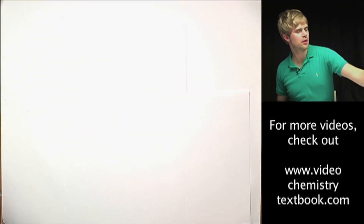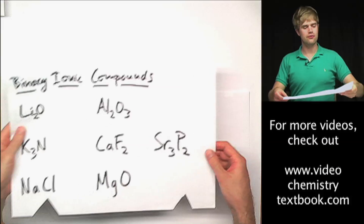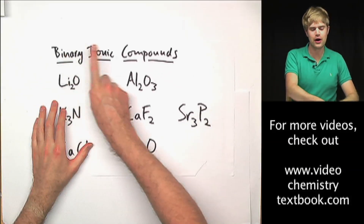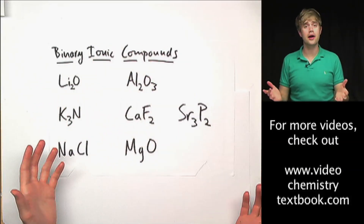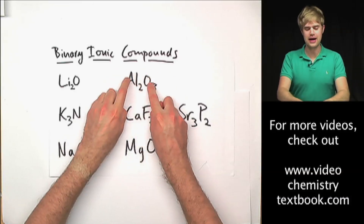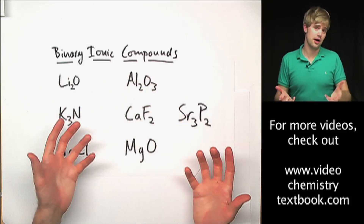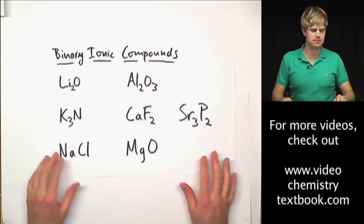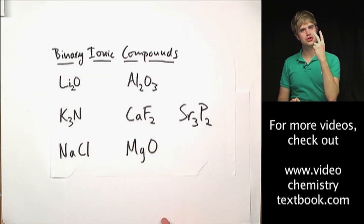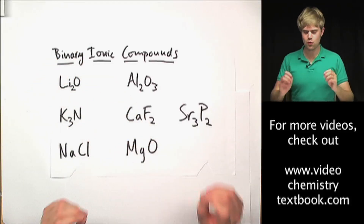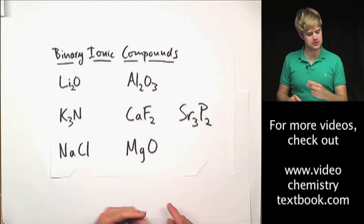There's one thing I want to say: sometimes these formulas that you're writing are referred to as the formulas of binary ionic compounds. You know why they're ionic — because we have a metal and a non-metal in everything that we wrote, so that makes it ionic. Metal and non-metal. What about the binary part? Binary means two, and every one of these formulas that we wrote has only two types of atoms.